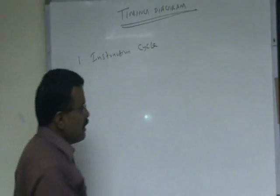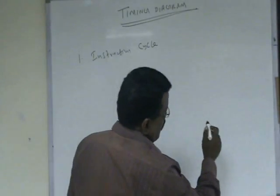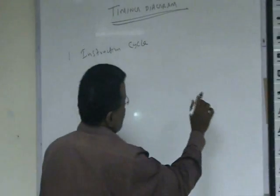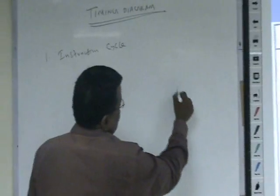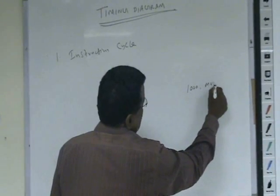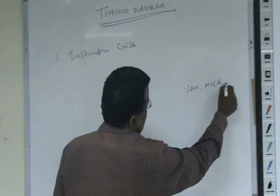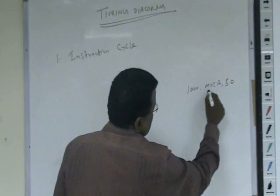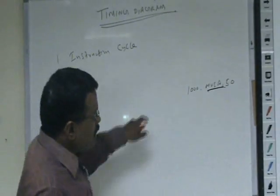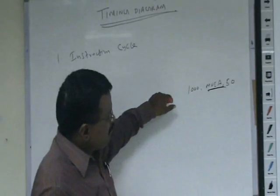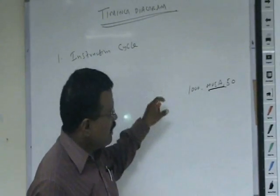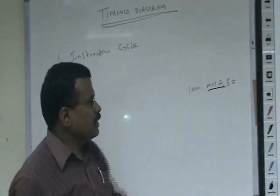Either it may be data or it may be an instruction, everything is stored only in memory. Suppose in a location 1000, if you have the instruction MVI A, comma, data byte 0 in memory — this is an instruction. So to execute that instruction, first the instruction is to be fetched, then it is to be executed.